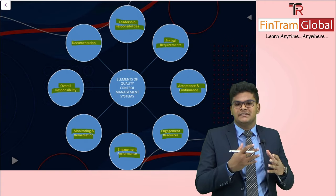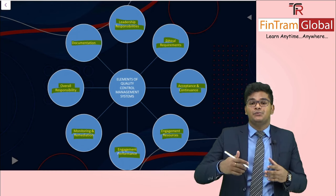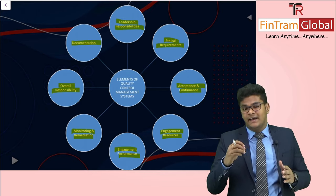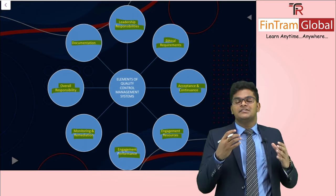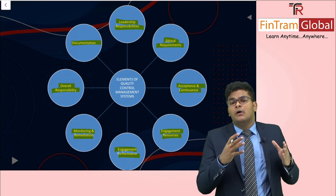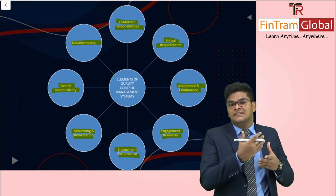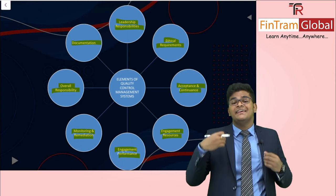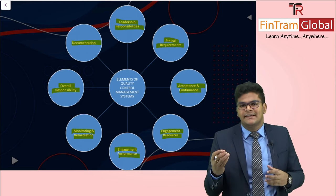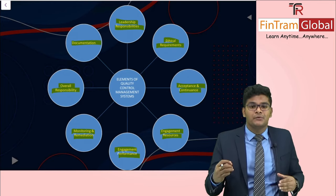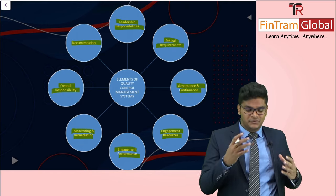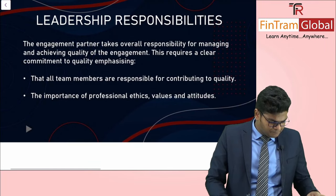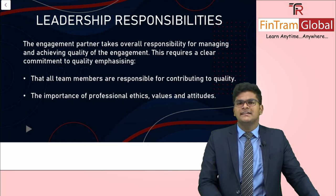As we go through each element, note that references are made to the respective standards — ISA 220, ISQM1, or ISQM2. Whenever content is referenced to ISA 220, think of it from an individual level perspective. Whenever content references ISQM1, think of it from an audit firm-level perspective.